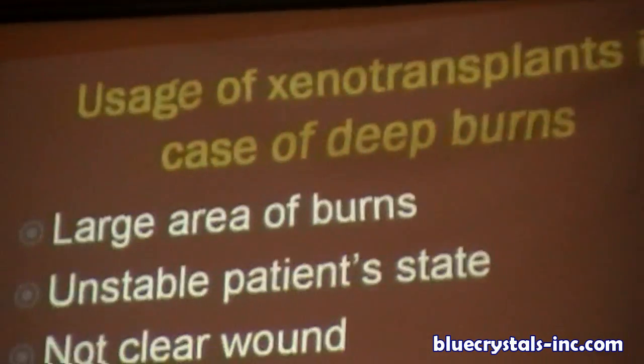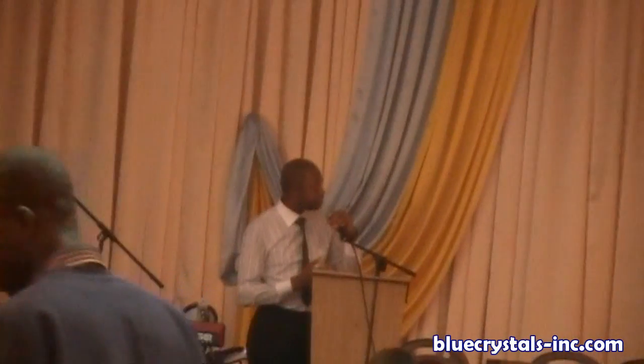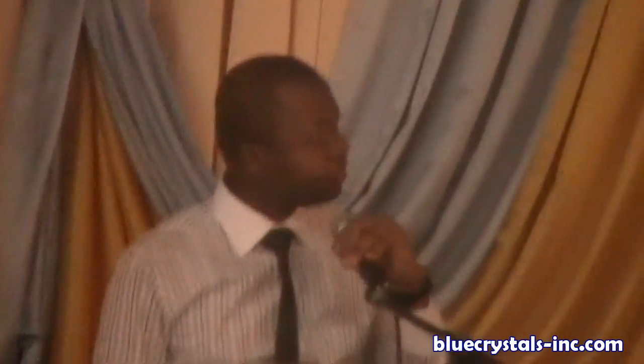The xenograft is used as temporary covering in deep burns. Unlike superficial burns where it is used as permanent covering, for deep burns it serves as temporary covering, especially in cases of limited donor scale for transplantation. It is effective for large burns, unstable patients, or wounds that are not yet clearly debrided. The xenograft is used as temporary covering before the permanent autograft is performed.